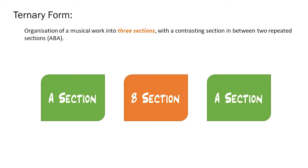Ternary form is the organization of a musical work into three sections, with a contrasting section in between two repeated sections, so we call it A, B, A. As the name suggests, with three distinct sections, the return of the A section comes back in its entirety at the end of the composition.